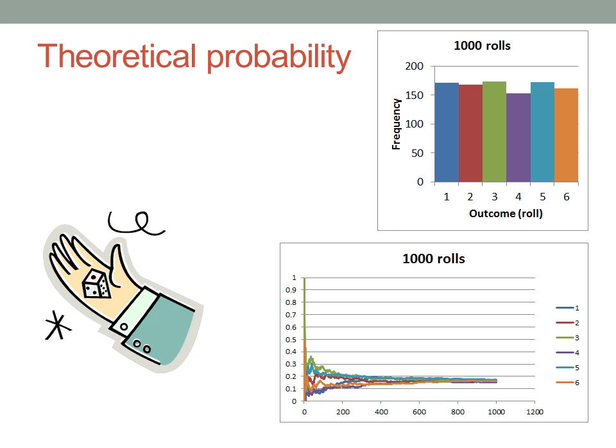If I repeat the experiment often enough, the experimental probability of any one outcome becomes closer and closer to a particular fixed number. We call that number the theoretical probability.